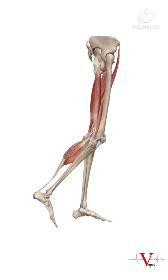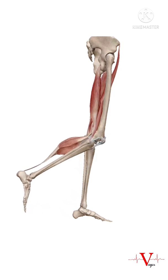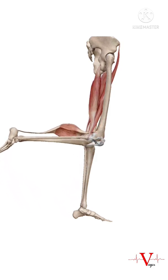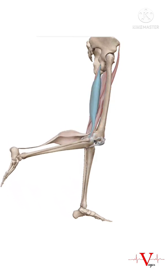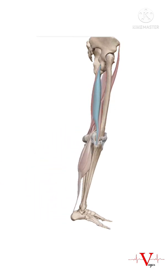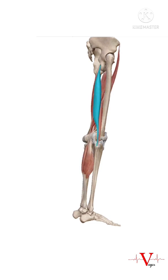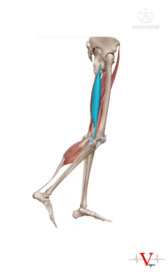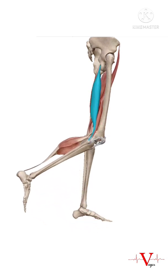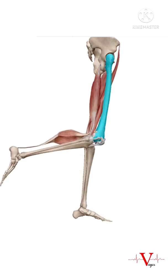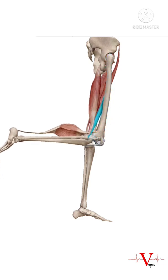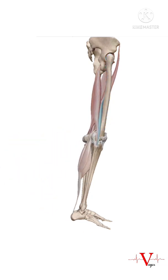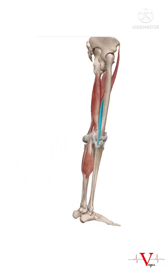Some of these muscles also help in knee flexion. You can see the muscle fibers of biceps femoris contracting, so the knee goes into a flexed position. The short head of biceps femoris is also involved.